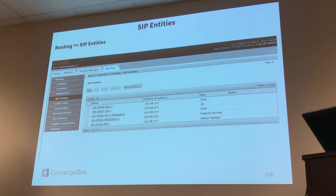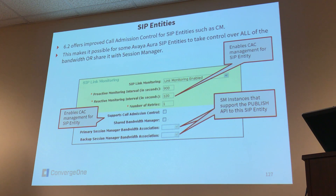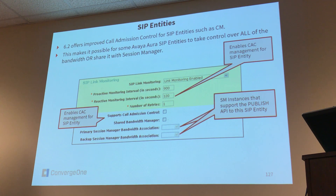We're talking about SIP entities right now because you're going to need to define one for your CM. For entities such as CM, release 6.2 offered an improvement with call admission control. Remember what call admission control is? It's a bandwidth threshold. In CM it's a bandwidth threshold between network regions. If you do it in Session Manager, it's a bandwidth threshold between locations.